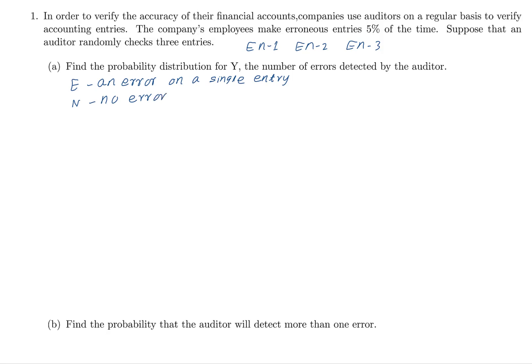Now think about all possibilities. There are three entries, so we check these three entries. Maybe the first one gets an error entry, the second one also an error entry, and the third one also an error entry. So we can say: error, error, error — all three errors.